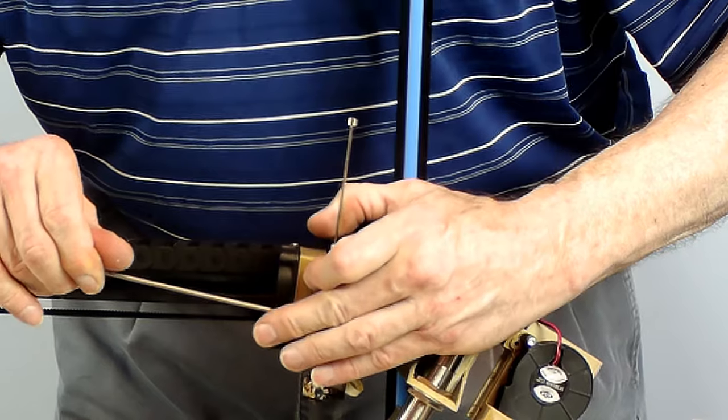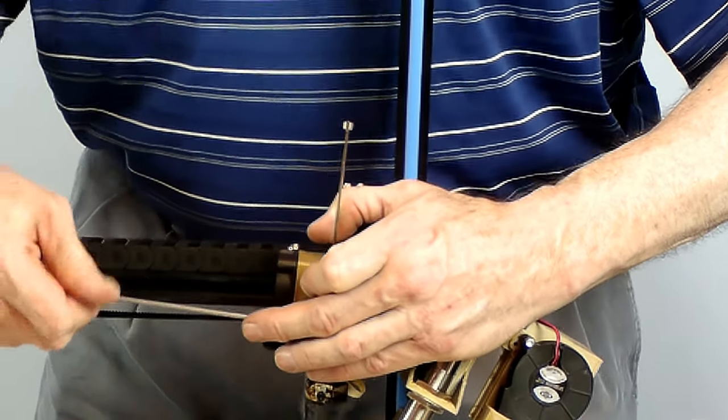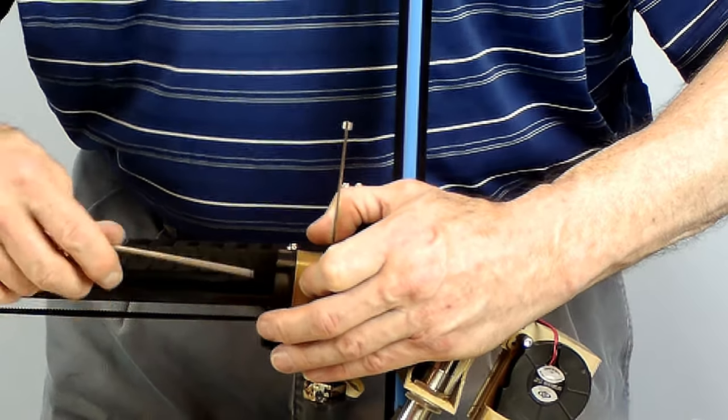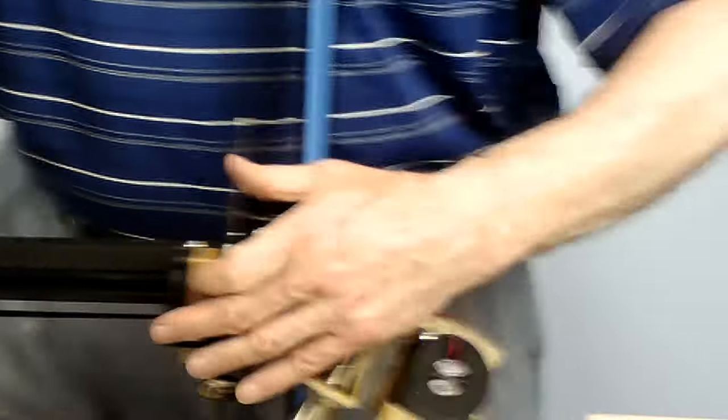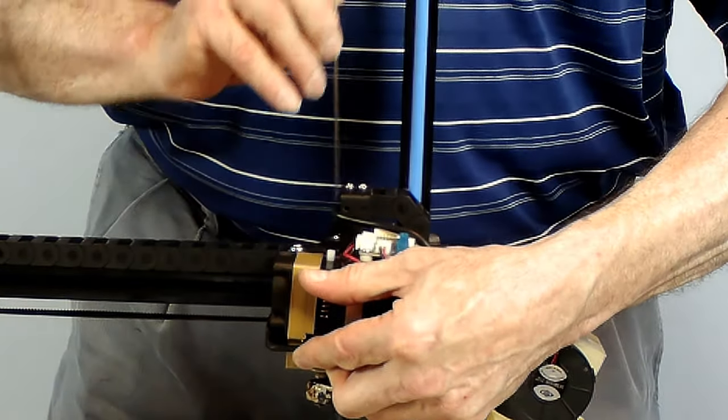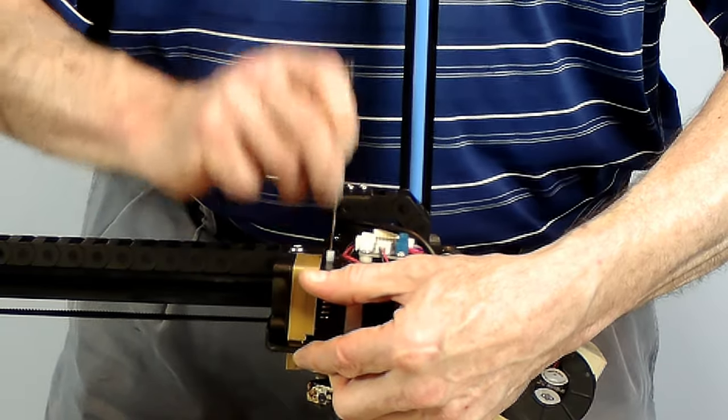So that when you want to feed filament through you're not fighting with a piece of the extruder happening to hang over because it's slightly misaligned. So now I'm tightening these. And I'm still not going to really jam them down because you're working metal to plastic. So you don't want to break anything. You don't want to warp anything. But you get them nice and snug. And then you check.